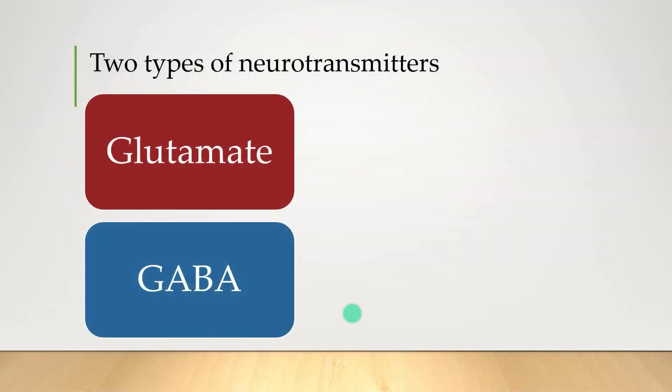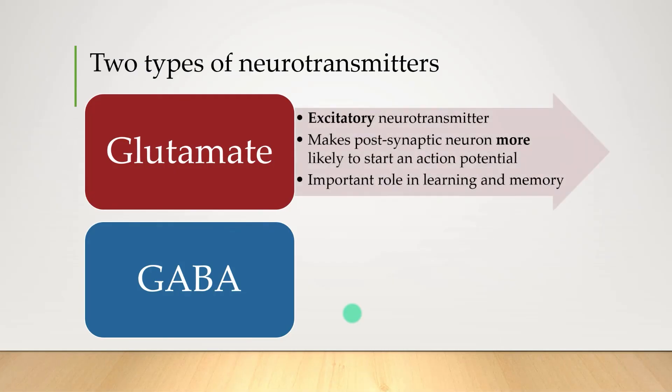So what do these guys do? Well, whenever glutamate is released in the brain, it pretty much always excites the next cell. That is, it's likely to start an action potential in the postsynaptic neuron. Glutamate pathways in the brain are really important when it comes to learning and memory.